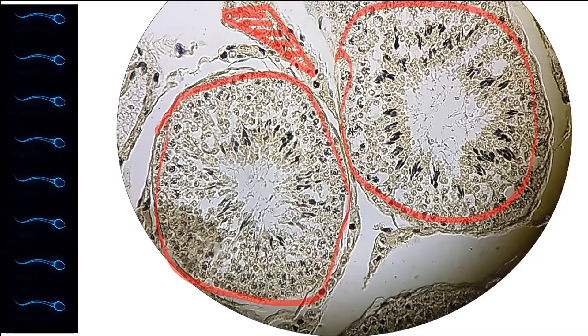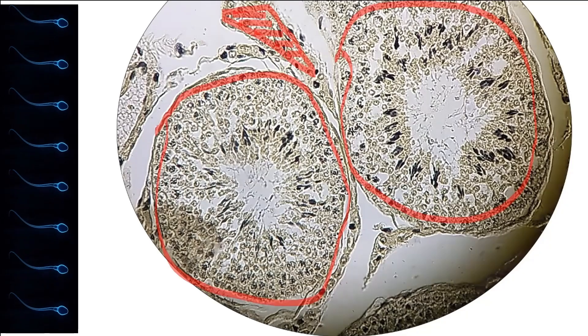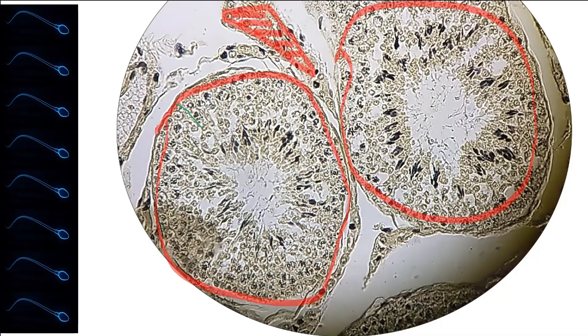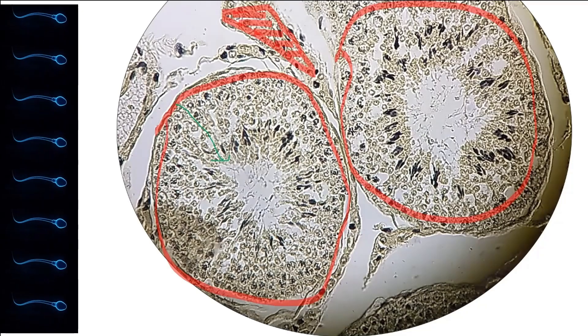In this seminiferous tubule, you can see that spermatogenesis begins from the outermost part towards the lumen.